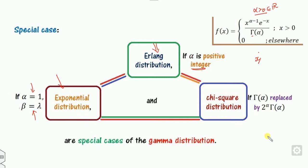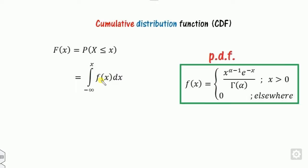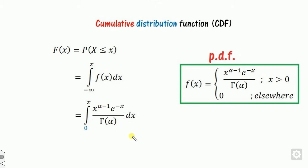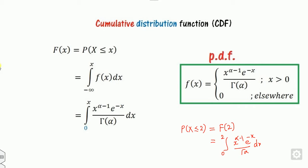If we replace the denominator with 2 to the power alpha, the gamma distribution becomes the chi-squared distribution. So the gamma distribution is very important as a generalization. For the CDF, it is denoted by capital F(x) and computed as the integral from minus infinity to x of the PDF. Once you know x and alpha, you can compute the CDF numerically.